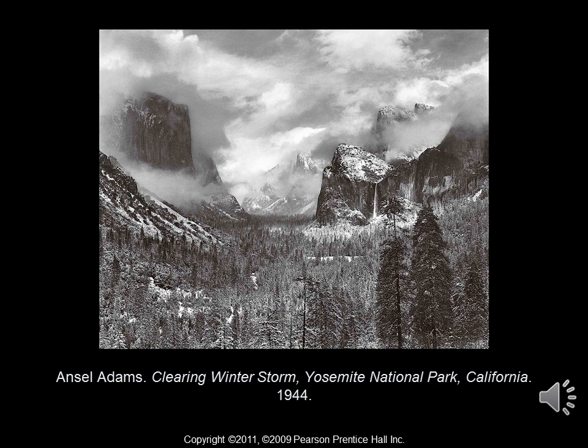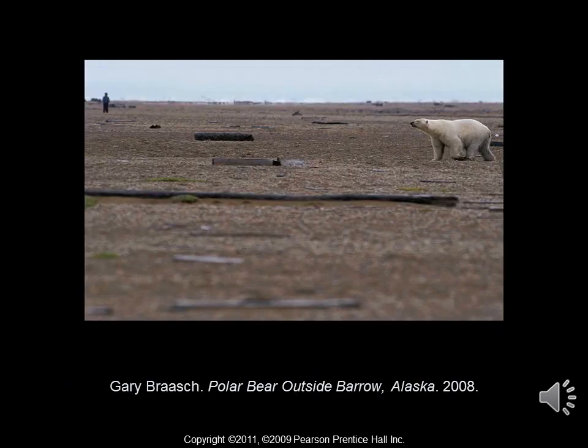Ansel Adams was trying to bring awareness to nature conservancy in America with his photographs. This photo by Ansel Adams is titled Clearing Winter Storm, Yosemite National Park, California, from 1944. He achieved lush photographs by setting up long exposure times. Gary Braasch's photograph, Polar Bear Outside Barrow, Alaska, from 2008, is intended to draw attention to warming temperatures in the Arctic areas where polar bears live. As we can see, there are plenty of subjects that artists can use to bring social awareness through their images.